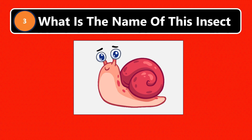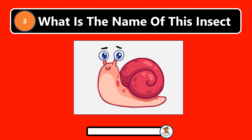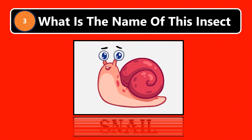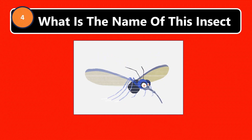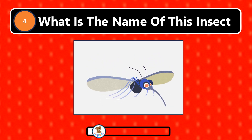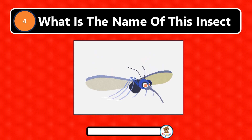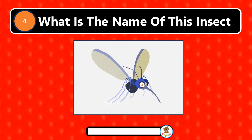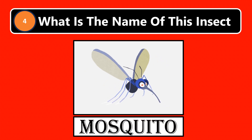What is the name of this insect? Slug. Snail. What is the name of this insect? Slug. Mosquito.